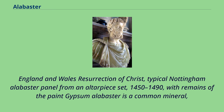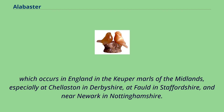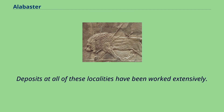Resurrection of Christ, a typical Nottingham alabaster panel from an altarpiece set, 1450–1490, with remains of paint. Gypsum alabaster is a common mineral which occurs in England in the Keuper marls of the Midlands, especially at Chellaston in Derbyshire, at Fauld in Staffordshire, and near Newark in Nottinghamshire. Deposits at all of these localities have been worked extensively.